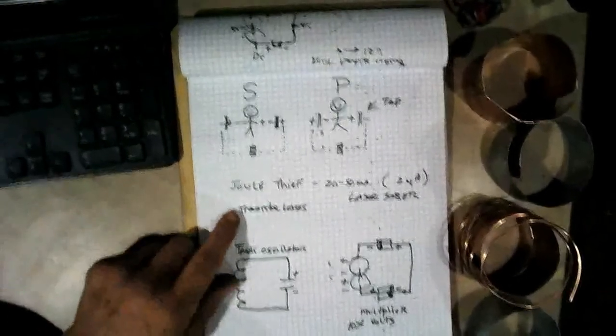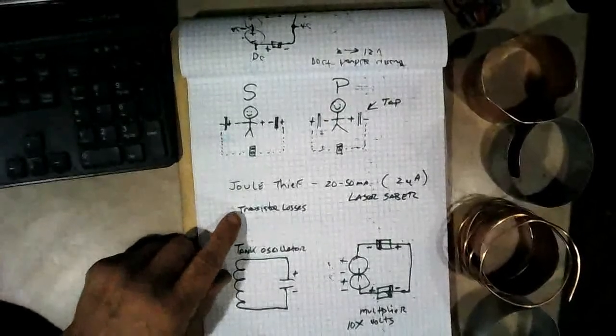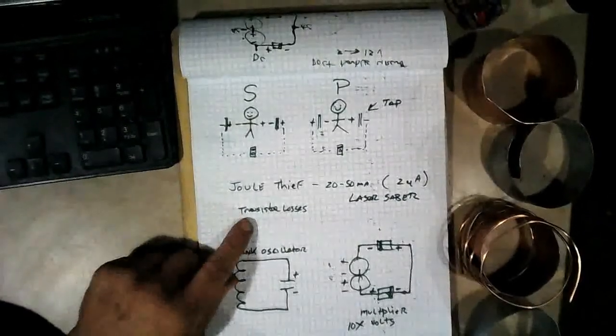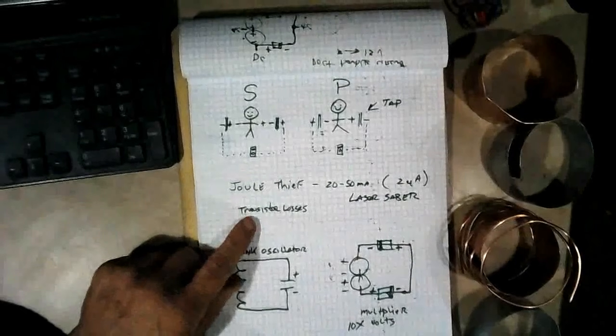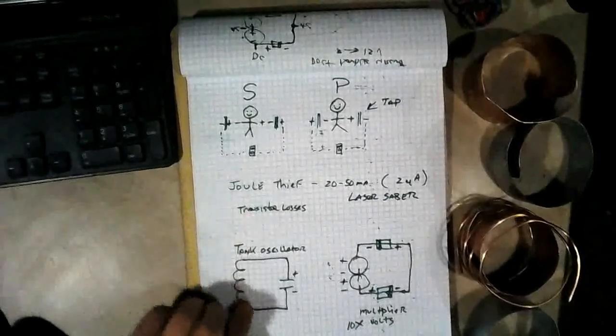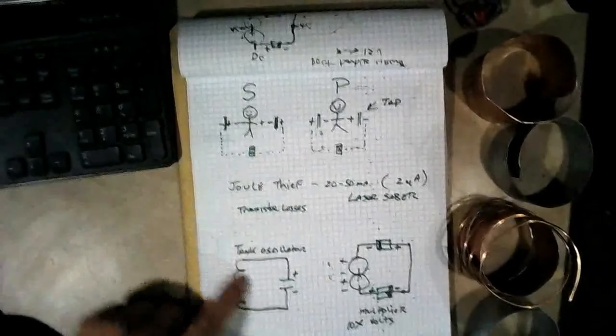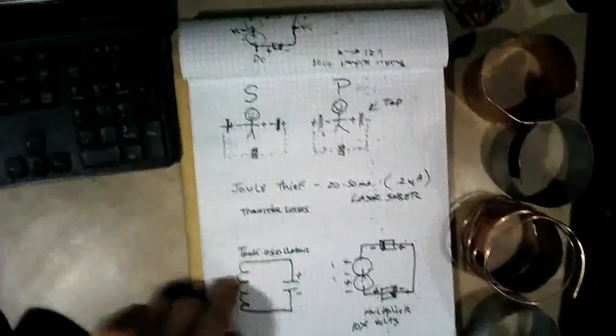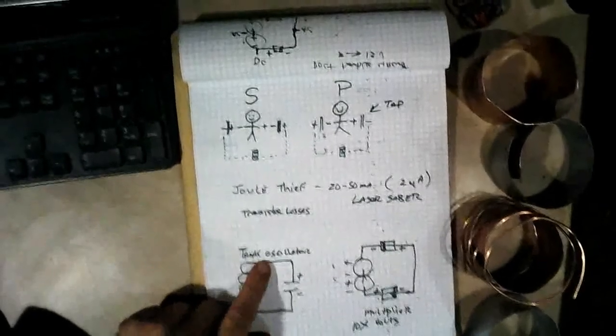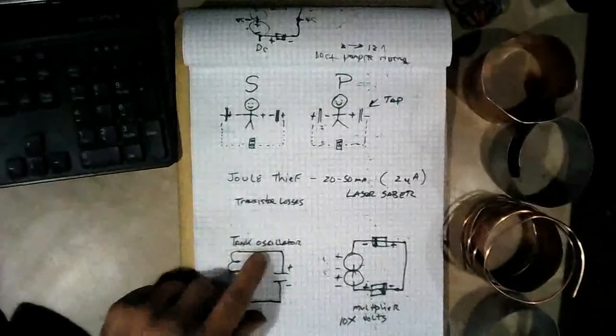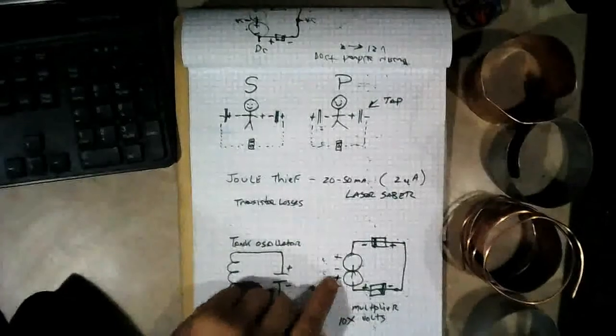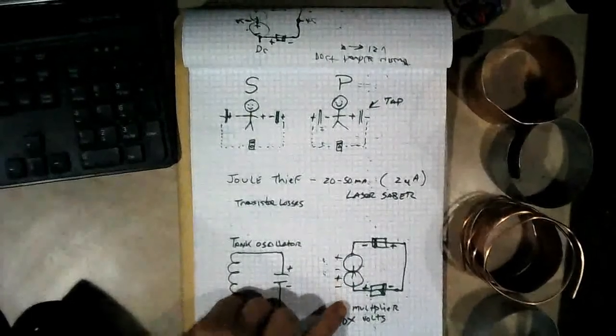But there is actually an easier way to do this switching than using a transistor. So you ought to be able to use a Joule Thief circuit, but do it without using the transistor to get the high frequency. And you can use this thing called a tank oscillator. Right here, it's just a capacitor and a coil. So if you've got your coil right here, you just need to add a capacitor in this loop thing right here. And now you get it, and it makes a tank oscillator. So you can get your switching through that.